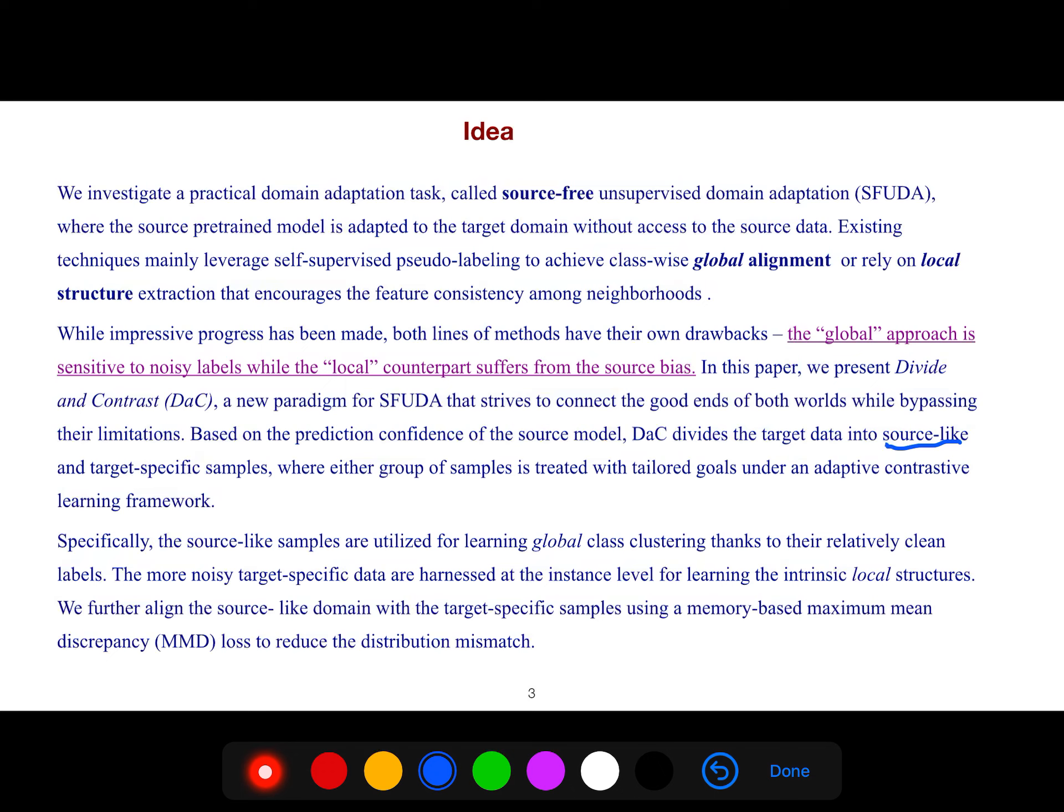Specifically, the source-like samples are utilized for learning global class clustering thanks to their relatively clean labels. The more noisy target-specific data are harnessed at the instance level for learning the intrinsic local structures. We further align the source-like domain with target-specific samples using a memory-based maximum mean discrepancy (MMD) loss to reduce the distribution mismatch.